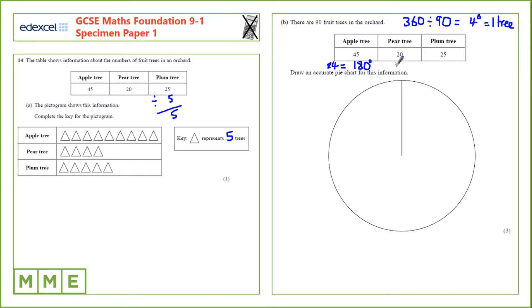If we multiply 20 by four, we get 80 degrees for pear. And if we multiply 25 by four, we get 100 degrees for plum.